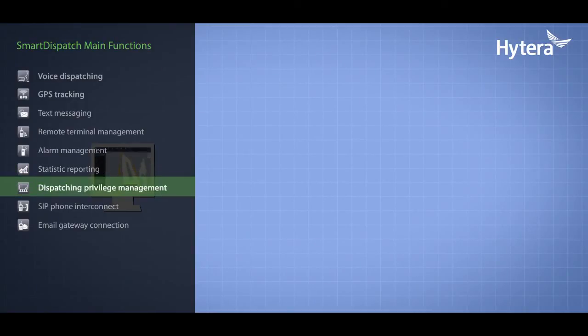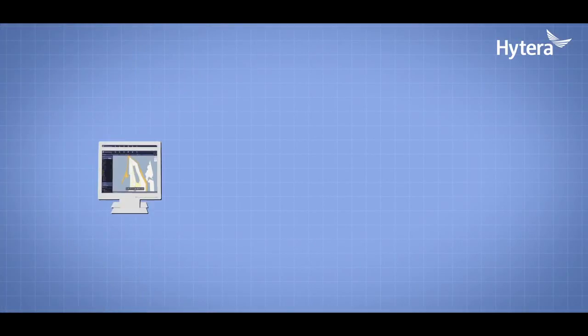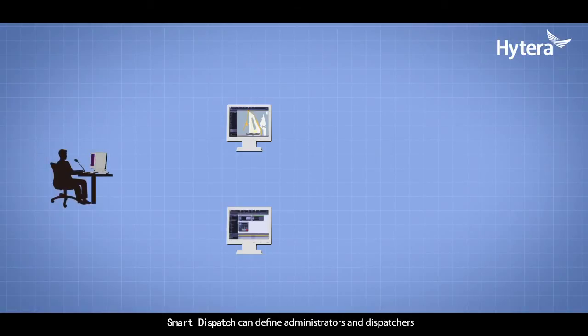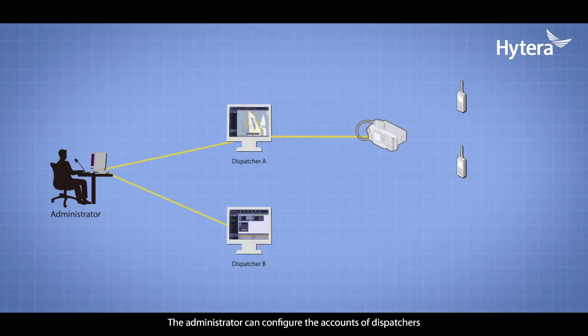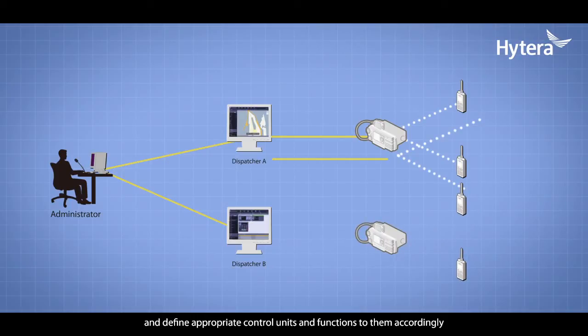Dispatching Privilege Management: Smart Dispatch can define administrators and dispatchers with different dispatching privileges. Selected dispatching functions and areas can be assigned to each dispatcher based on their demands. The administrator can configure the accounts of dispatchers and define appropriate control units and functions to them accordingly. The dispatcher is only allowed to use the authorized functions.